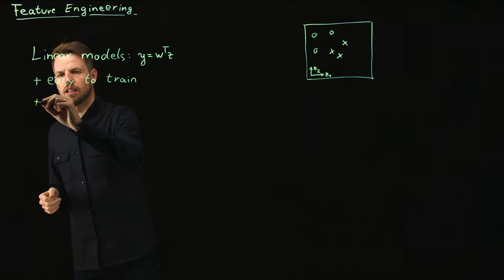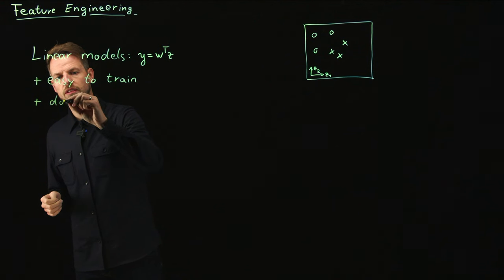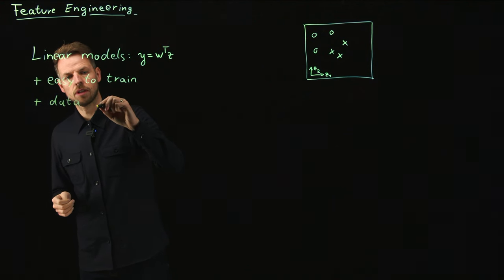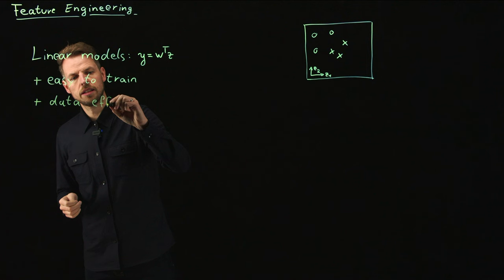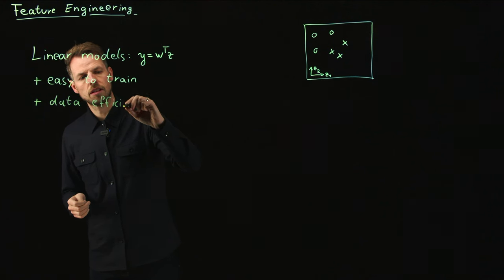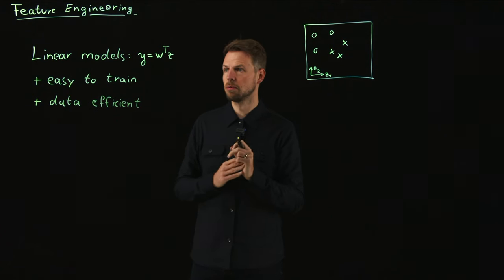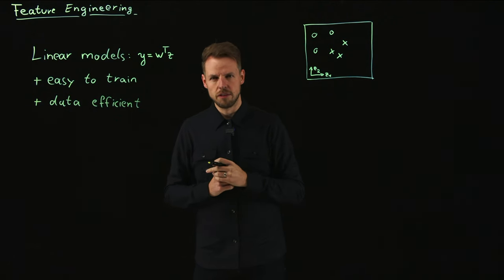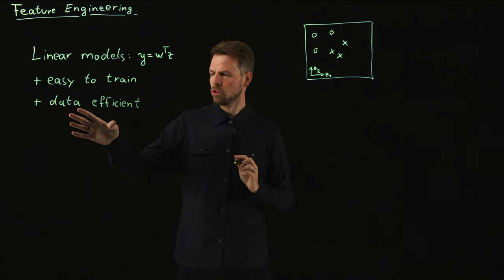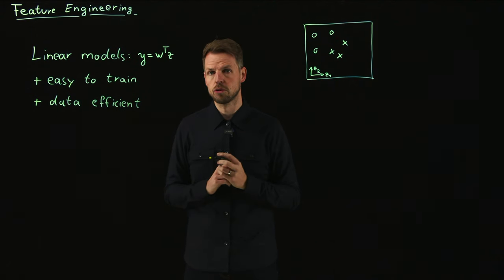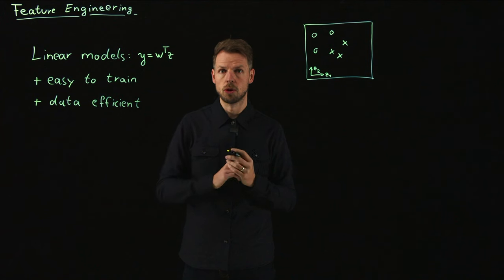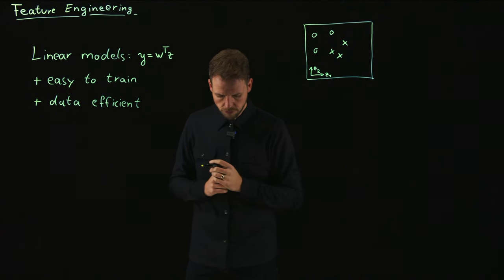The next thing is that it's usually very data efficient. A linear model means that the number of parameters that we need to train tends to be small. Linear relationships can be modeled very easily, so we usually do not require large amounts of training data to find a good model that generalizes well.